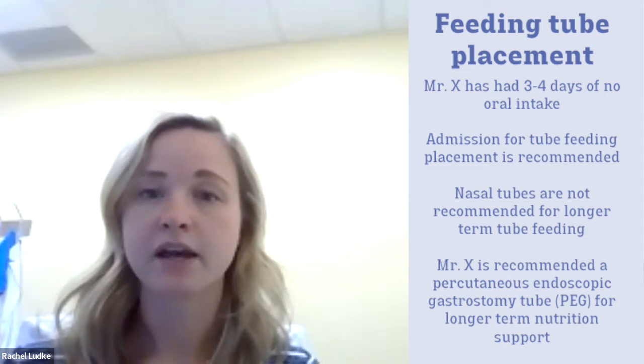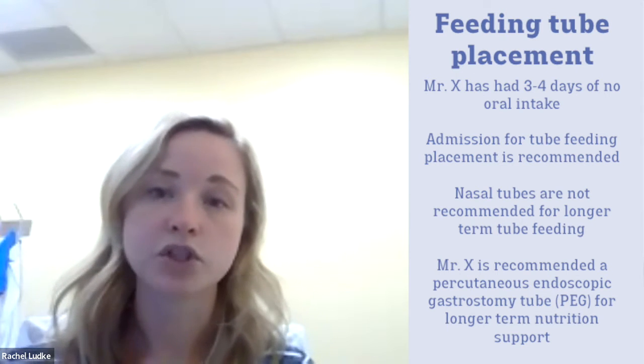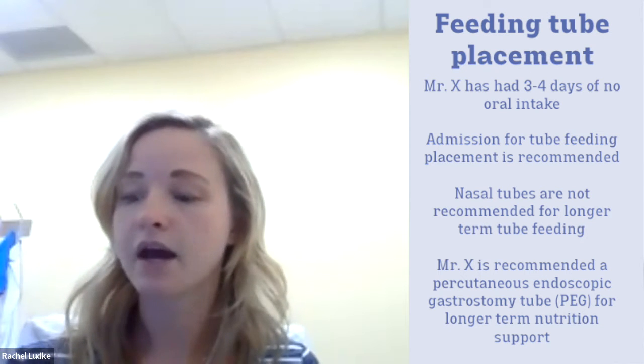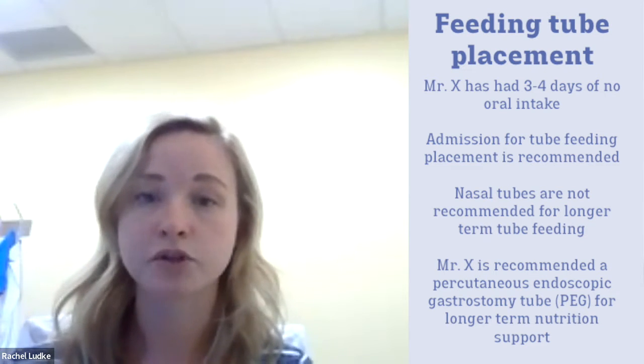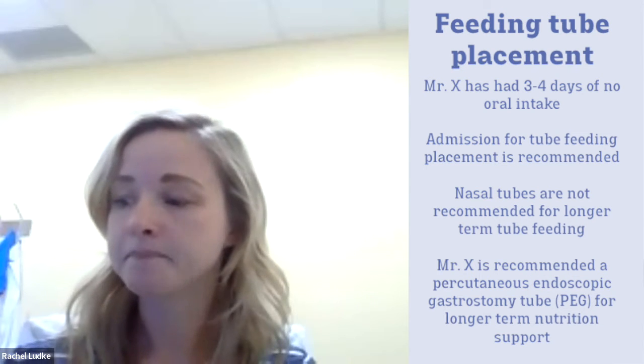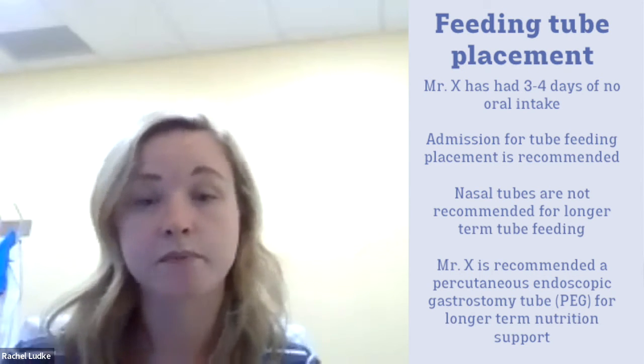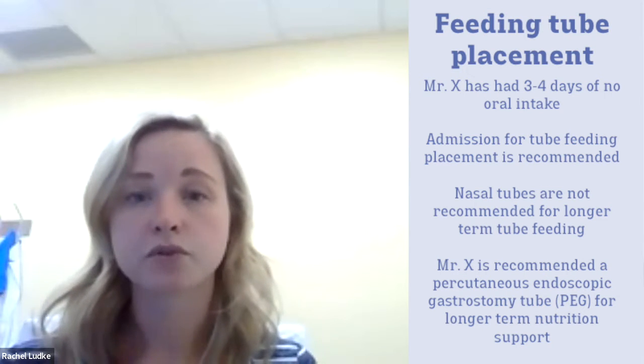We're going to do a G tube over a J tube because he has a functioning stomach. If Mr. X had any issues with any GI disorder, such as gastroparesis, if he had a prior gastric surgery that altered his anatomy, or if he had any prior tube feeding intolerance in the past, we might want to consider jejunal feeding for him.